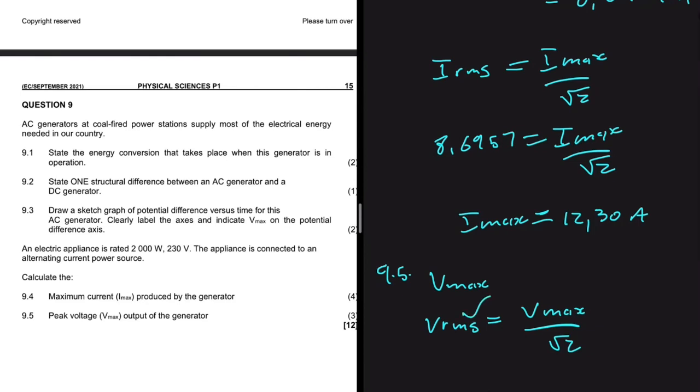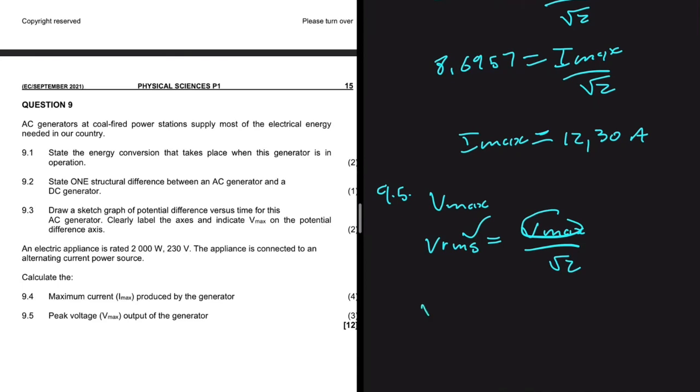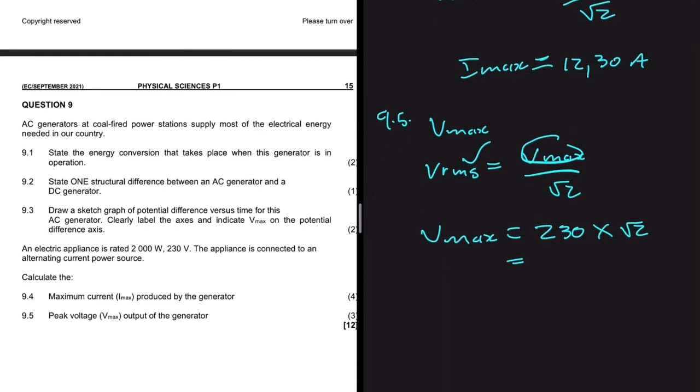We have VRMS, which is 230. Now we're looking for V-max. So V-max will be equals to 230 multiplied by the square root of 2. And then if you do that arithmetic, we get 325.27 volts.